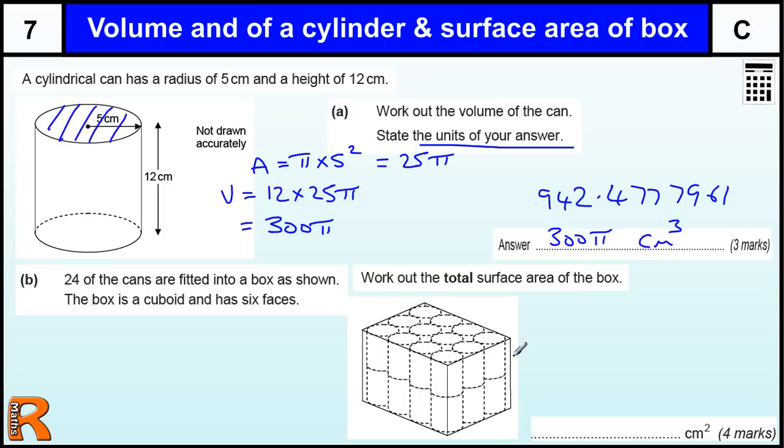So, the height, fairly straightforward. Two cans high. One can is 12, so two cans is 24. Going this way, this length here, well, across one of the cans is 10 centimeters because it is 5 centimeters from the center. The diameter is 10, so two of them will be 20 and three of them will be 30. And this way we have got four cans: 10, 20, 30, 40.